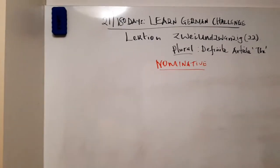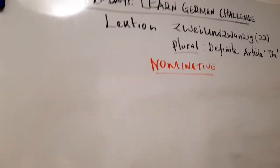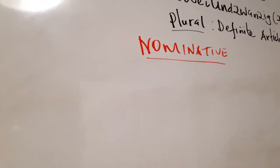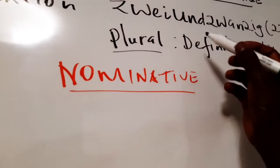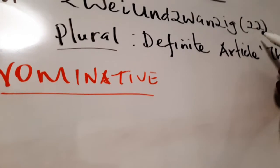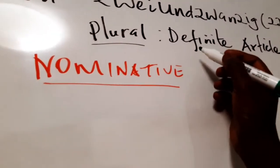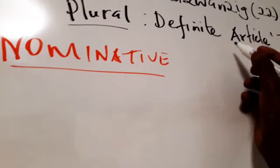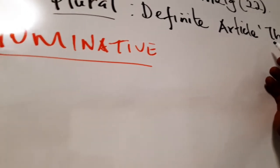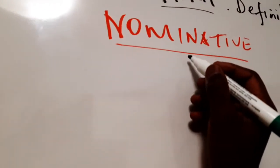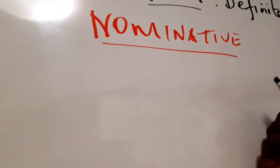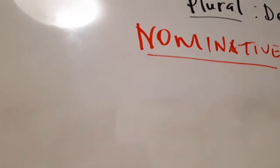Alright, good evening and welcome back to the Learn German Challenge. Today is Lektion 2.1.6, that is Lesson 22, and we want to deal with the plural of the definite article in the nominative case. Tomorrow maybe we'll check the accusative case, so let's start.